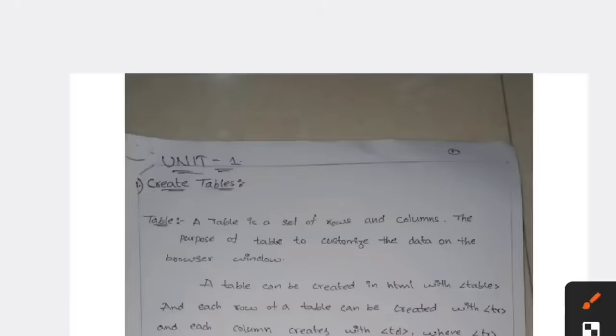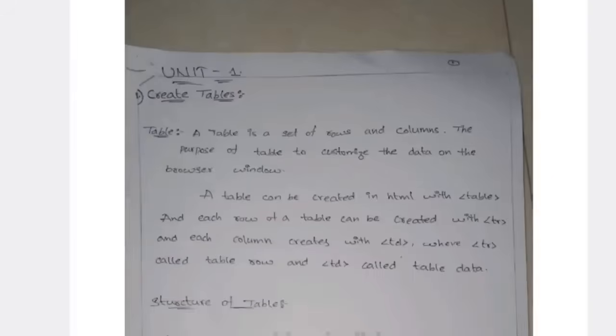Coming to the first question - table question. If you are finding a table name in your question, you need to write this answer. What is table? A table is a set of rows and columns. The purpose of table is to customize the data on the browser window. If you want to customize your data in HTML or any browser, you need to use the table. A table can be created in HTML with the table tag.